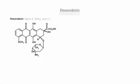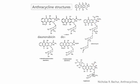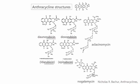Doxorubicin is an anthracycline chemotherapy drug. It is used for solid tumors such as breast, lung, and ovarian cancers, as well as leukemias and lymphomas. Anthracyclines typically end with 'rubicin' in their names.